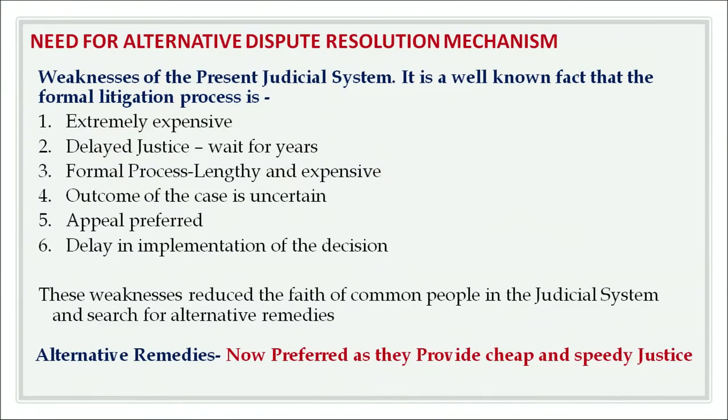Before we proceed with why there is a need for alternative dispute resolution, it is important to know the weaknesses of the present judicial system that led us to look for alternative remedies. The formal litigation process is extremely expensive, provides delayed justice, and one has to wait for years before justice is delivered. The process is absolutely formal, lengthy, and expensive, with uncertain outcomes. Appeals are often preferred after finalization and there is a lot of delay in implementation of decisions. All these weaknesses reduce the faith of common people in the judicial system, leading to the search for alternative remedies that provide cheap and speedy justice.